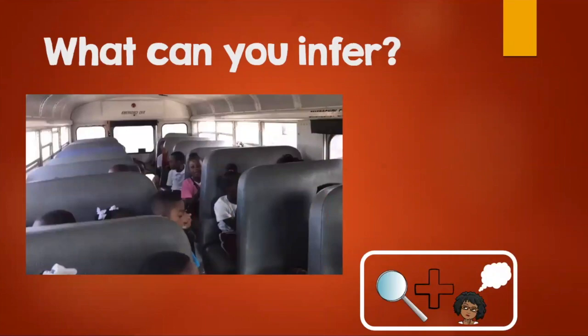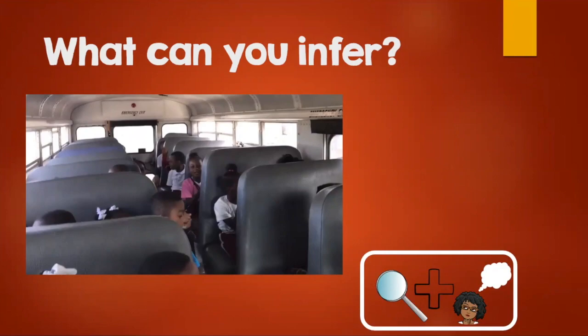Let's look at this picture. What can you infer? Remember the strategy — think of the clues of what you see in the picture as well as what you already know in your head. That's amazing, you're so good at this! The boys and girls are going on a field trip. You see that the boys and girls are sitting at the bus quietly, and they're wearing their PE uniforms. They must be going on a field trip. That's an awesome inference, boys and girls!